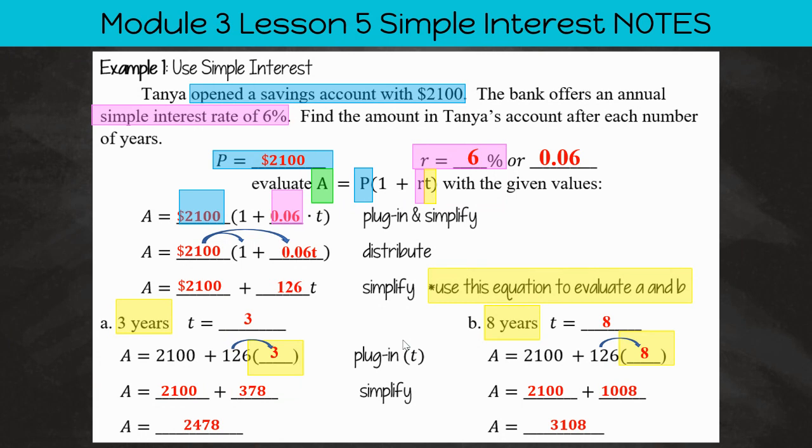Then we're going to add that to 2100, and we get 3,108. So after eight years, there's $3,108 in the account, in Tanya's account.